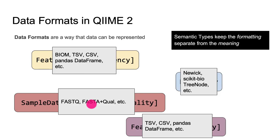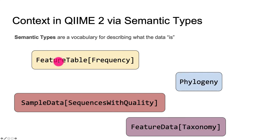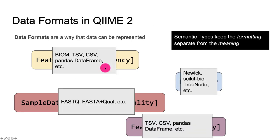There's also an interesting observation to highlight here. You might notice that feature table of frequency and feature data of taxonomy both have many of the same formats listed — BIOM, TSV, CSV, or data frame. And so if I give you a TSV file, you can't just immediately look at that and know whether it represents taxonomy data or a feature table. The point is that the semantic type is the context that helps identify what the contents of that file actually are.